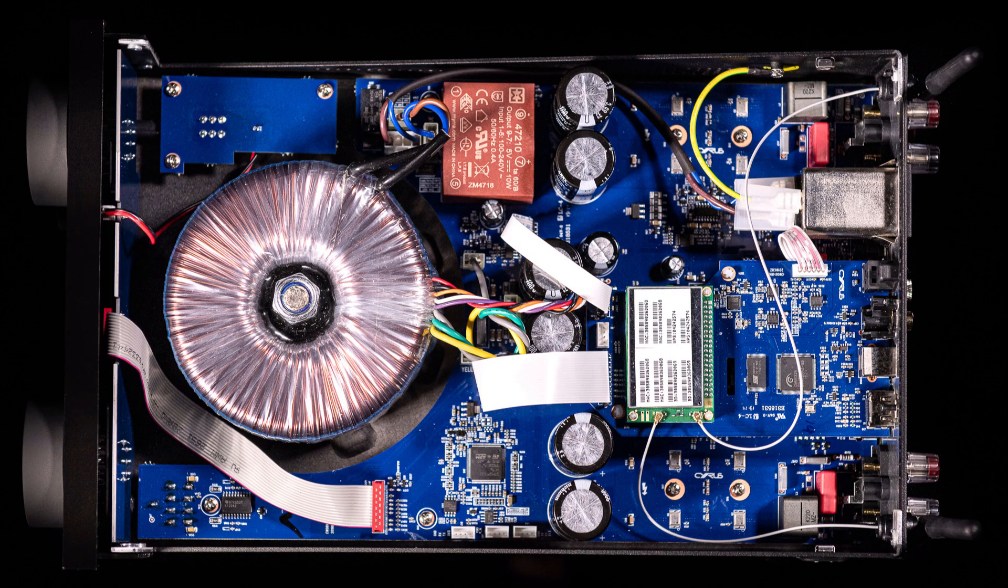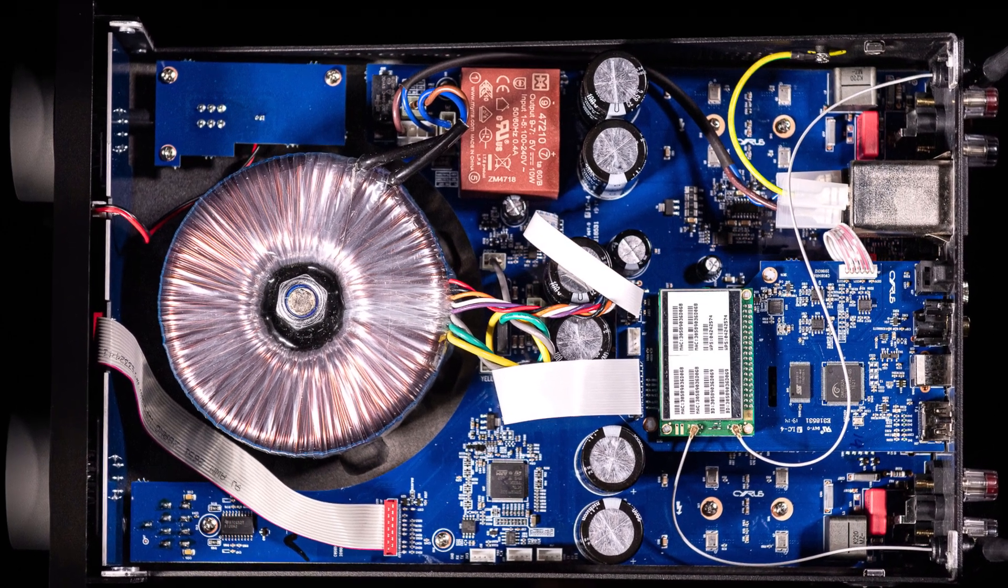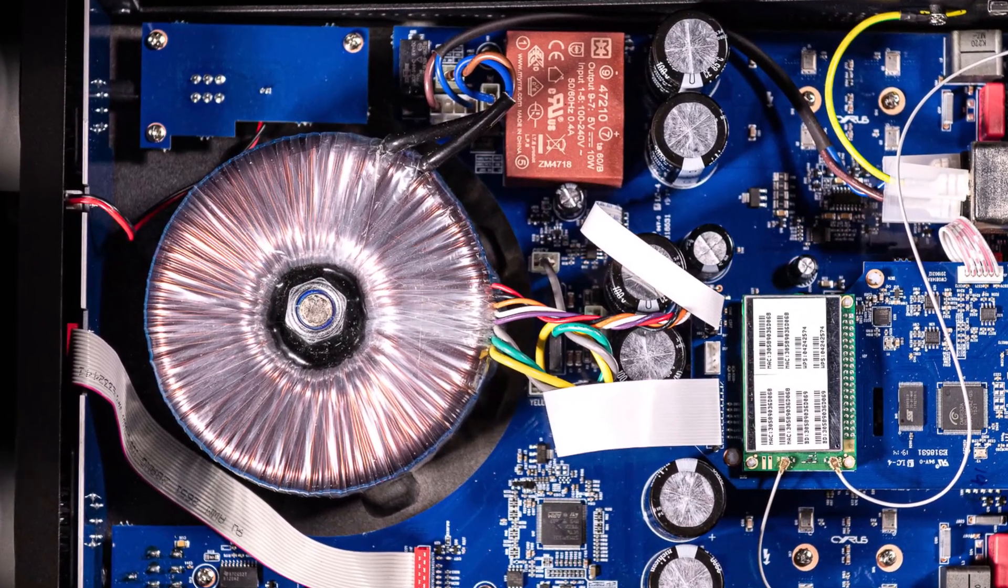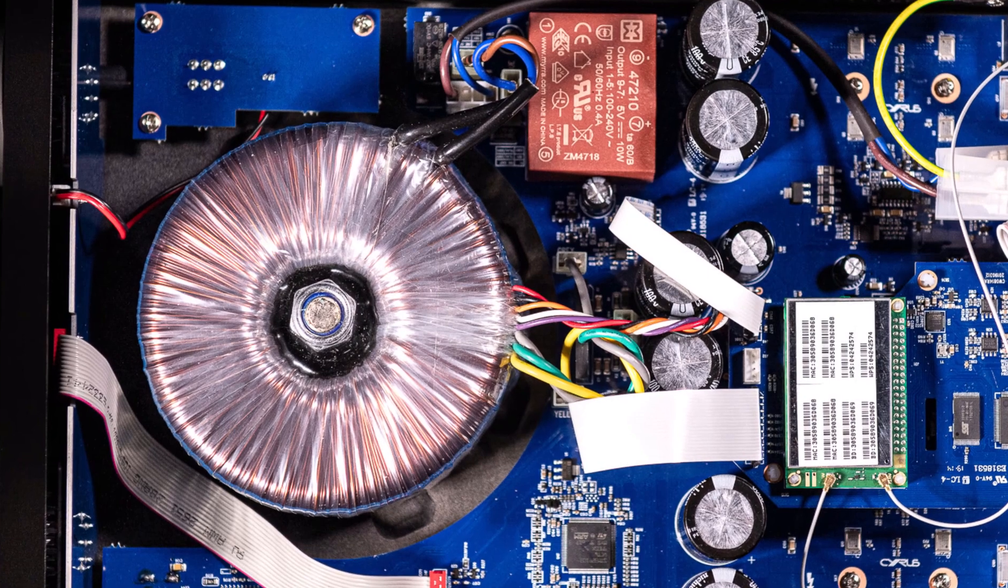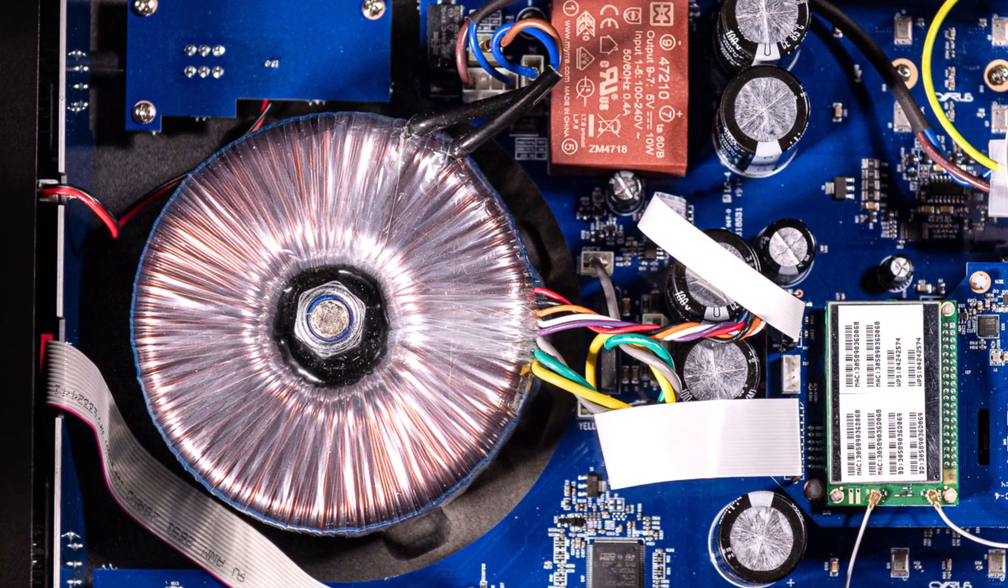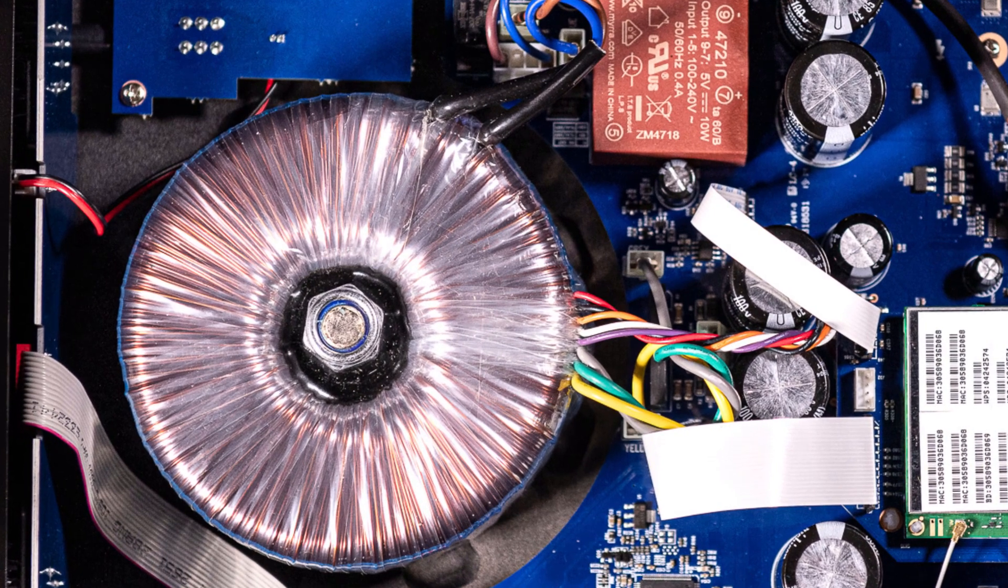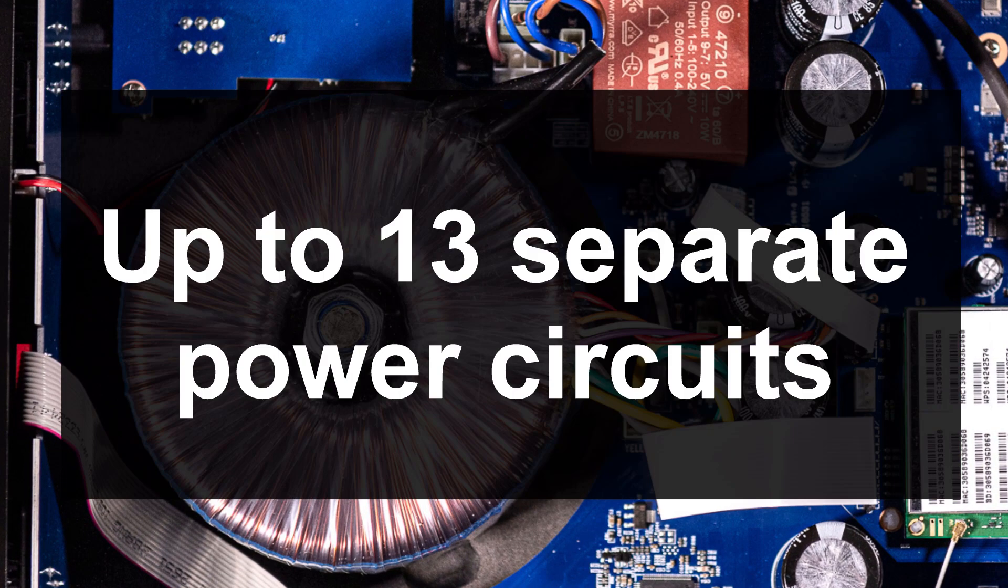Now, Cyrus is known for its focus on good power supplies. It is no different in this case. While Class D amplifiers normally use switching mode power supplies, Cyrus decided to use linear power supply. What is more, there are up to 13 separate power circuits that supply different sections of the board. This helps limit noise and boost performance.